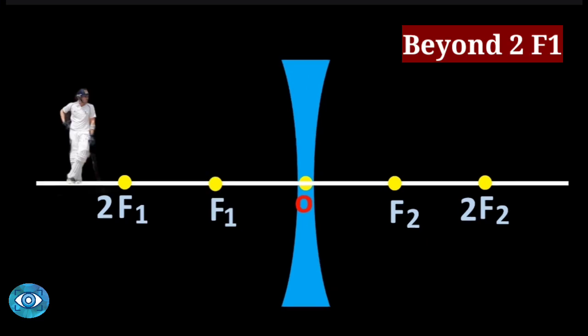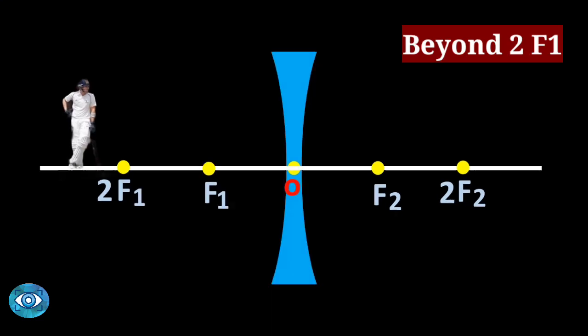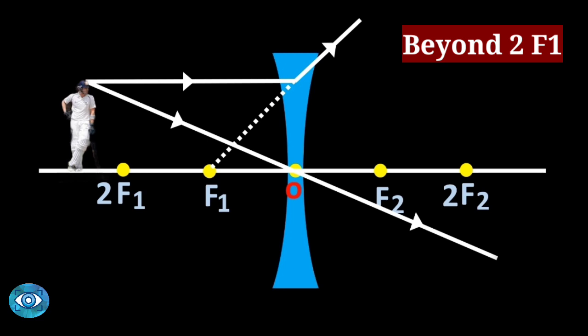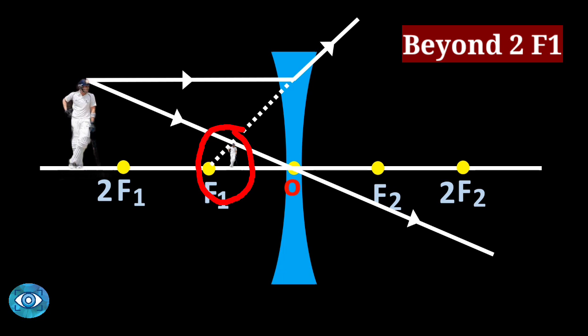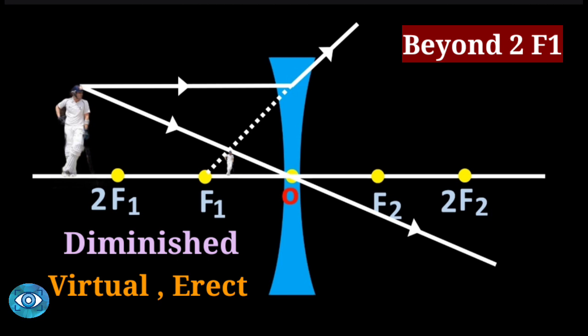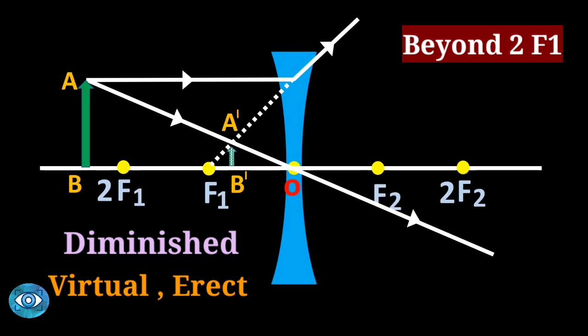Case two: the object is beyond 2f1. We consider two light rays from the top of the object and apply rule number one and rule number two. The image is formed between f1 and O. The image is small, virtual, and upright.